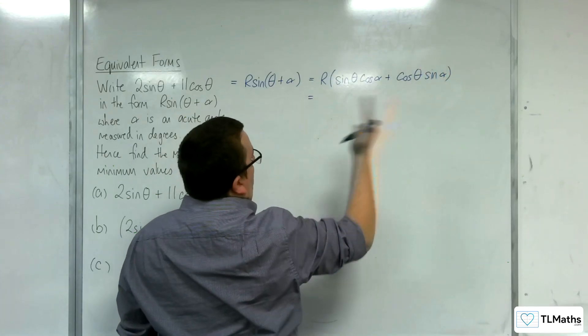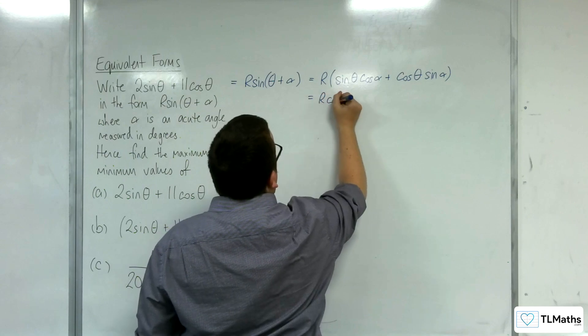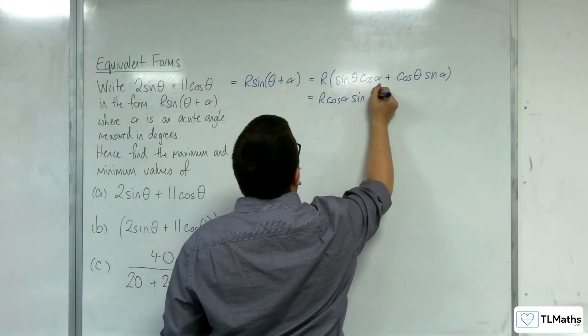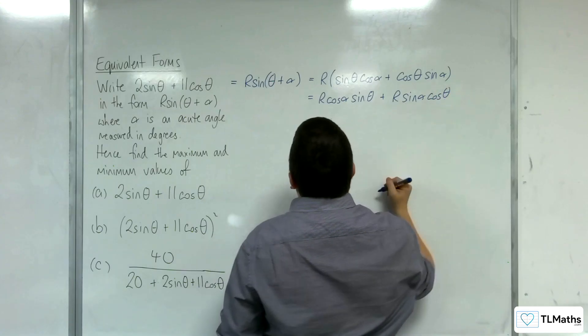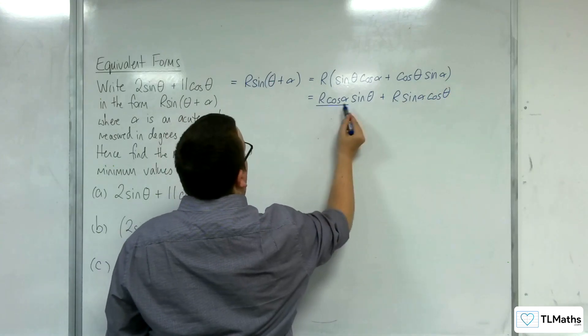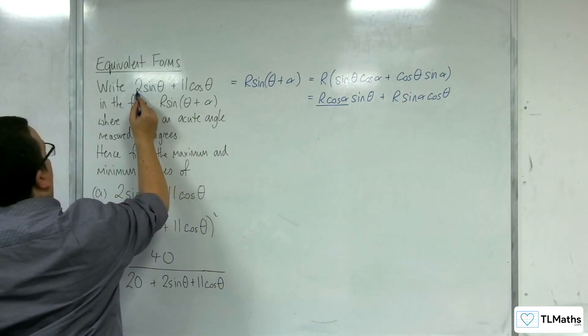Now write the alphas to the front, so R cosine alpha sine theta and R sine alpha cosine theta. So whatever's in front of the sine theta here must be what is in front of the sine theta there.